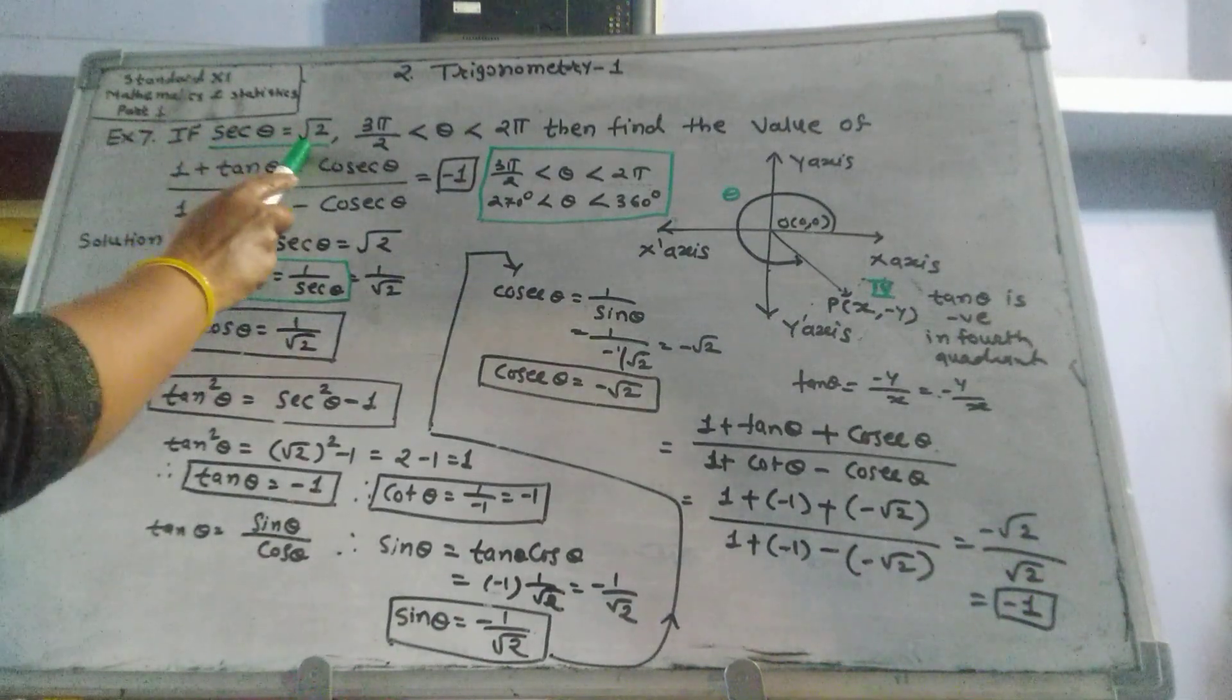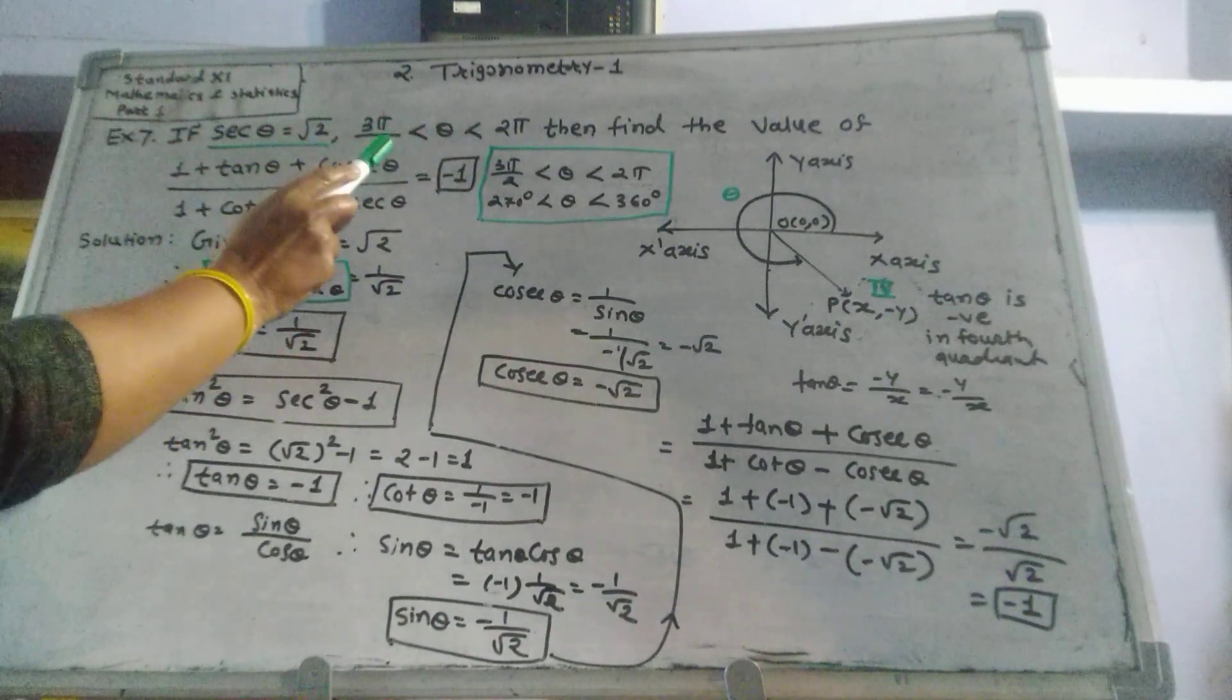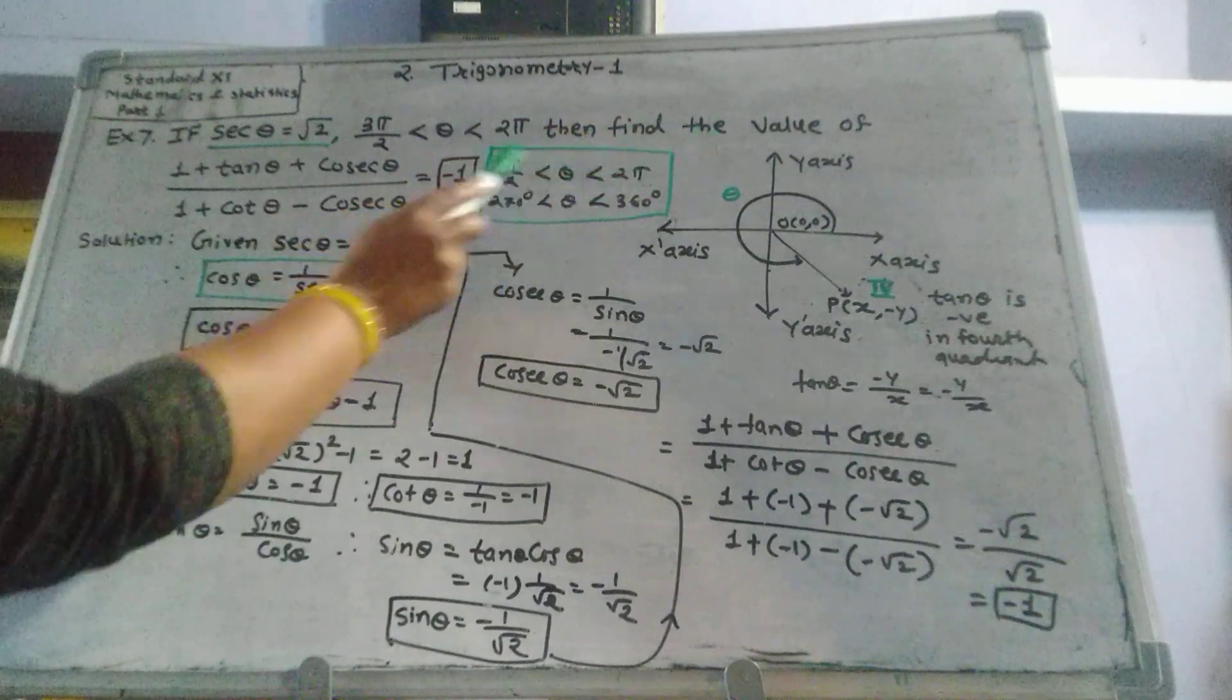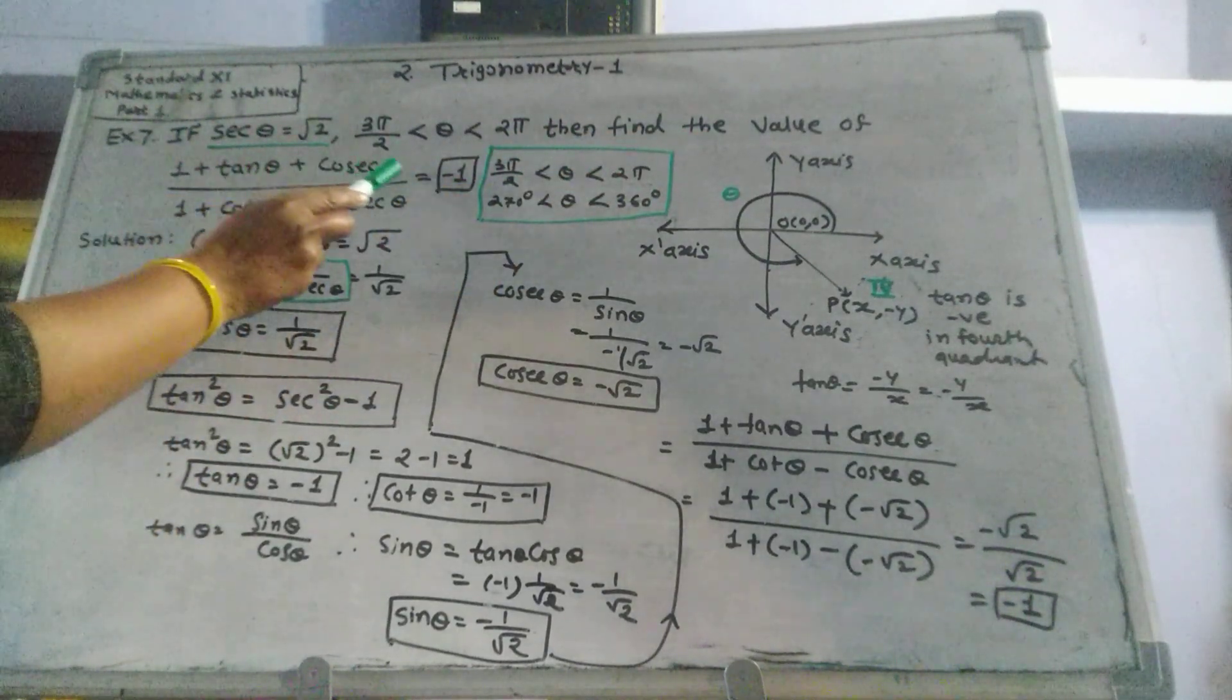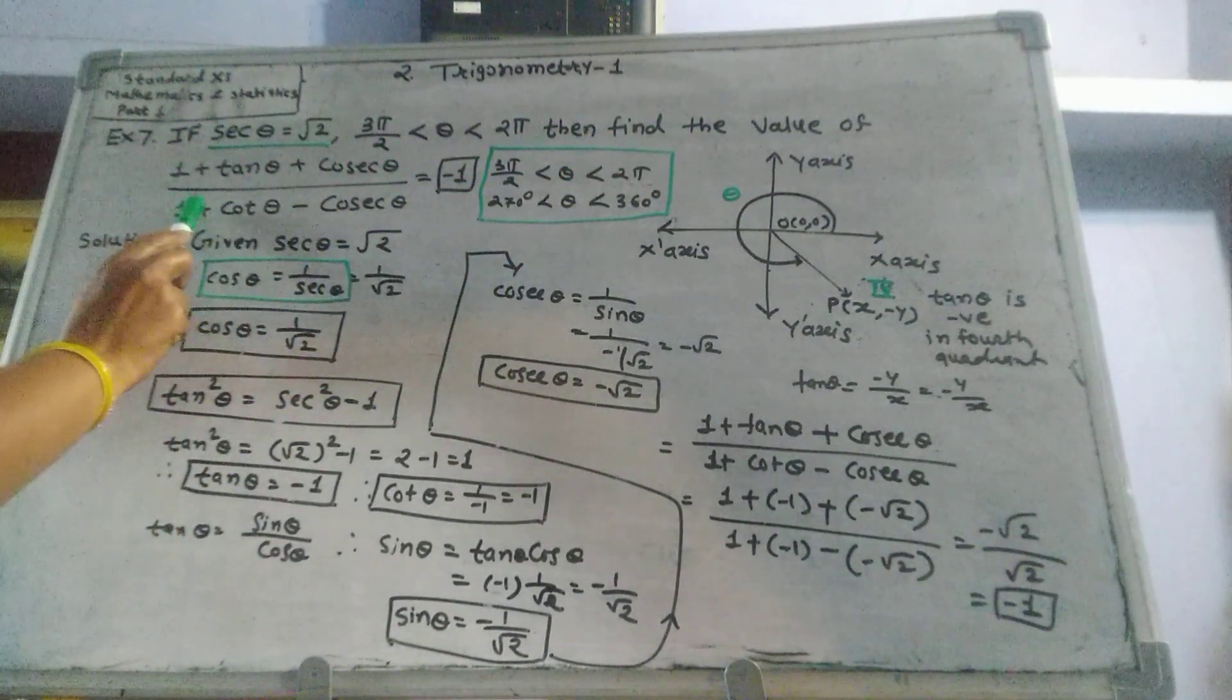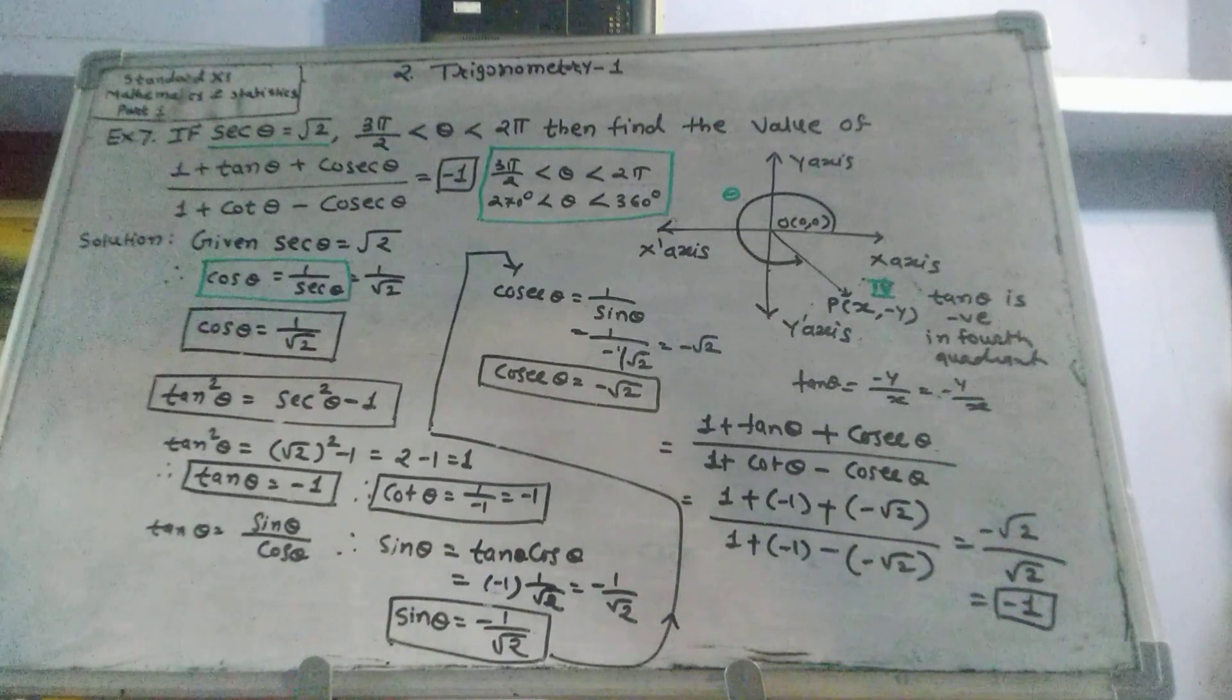If sec theta is equal to root 2 and theta is between 3 pi by 2 and 2 pi, then find the value of 1 plus tan theta plus cosec theta divided by 1 plus cot theta minus cosec theta.